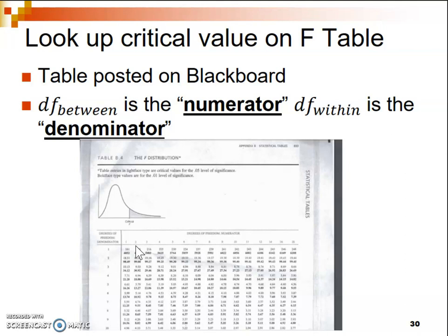We had 3 levels, subtracted 1 from it, which gives us the degrees of freedom between of 2. So we're going to look in the column for 2. We're also going to look for our degrees of freedom within as the denominator. The denominator tells you which row to look at.